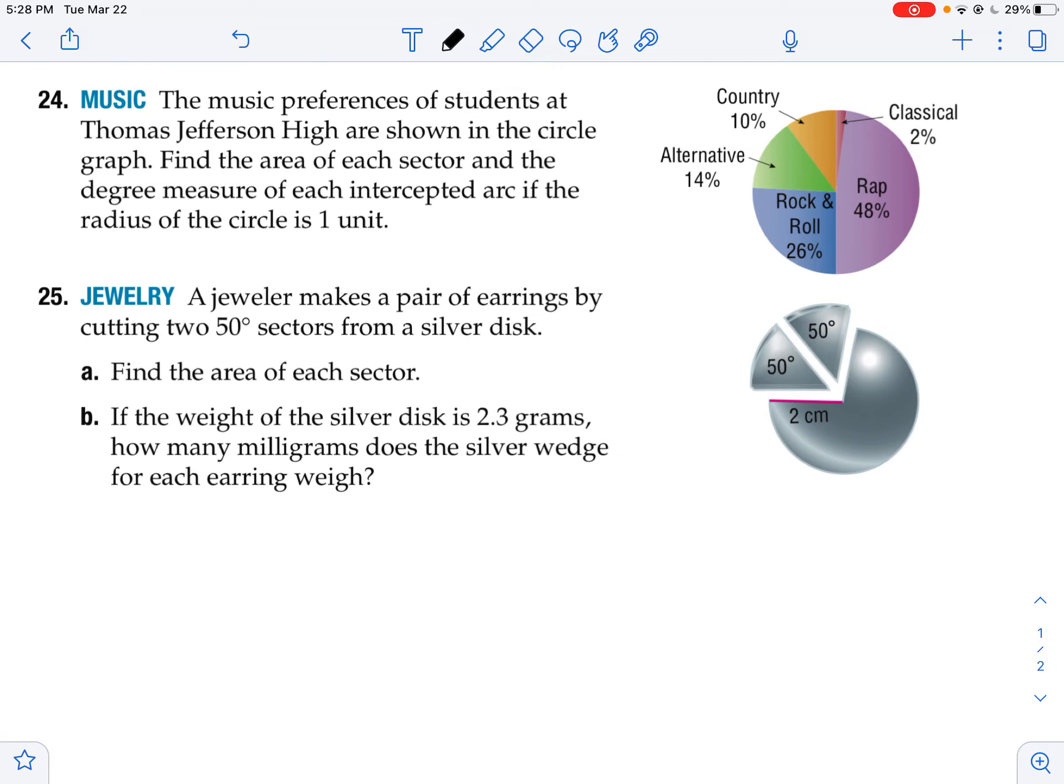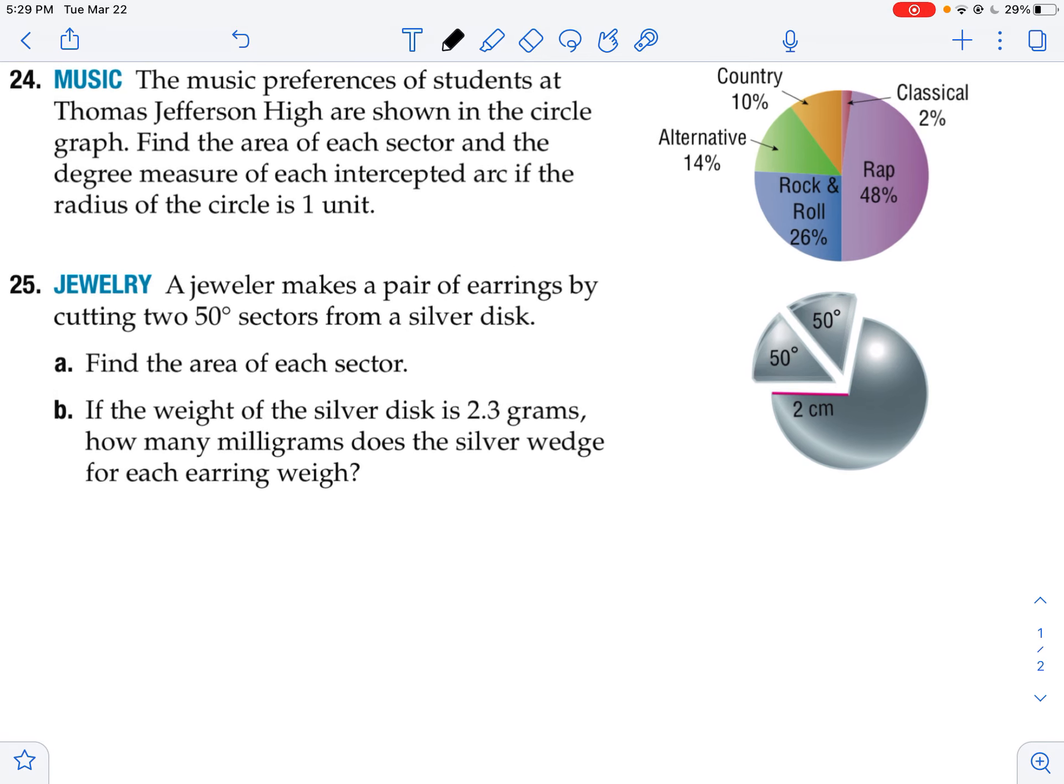Here in problem 24, it says the music preferences of students at Thomas Jefferson High School are shown in the circle graph. Find the area of each sector and the degree measure of each intercepted arc if the radius of the circle is one unit. So if the radius is one, then the area is pi times one squared, or pi times one, or just pi.